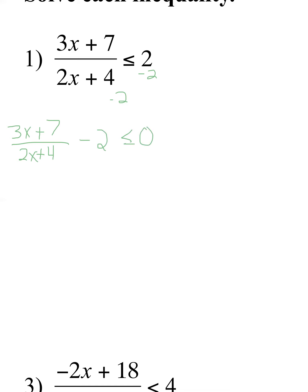Now I want to simplify the left-hand side. You can subtract fractions — I know 2 is not a fraction but let's put it over 1 so now it is. To subtract fractions you need common denominators. I need to get 2/1 to have a denominator of (2x + 4). Remember I can multiply anything by 1 and not change its value, so I'll multiply by (2x + 4)/(2x + 4).